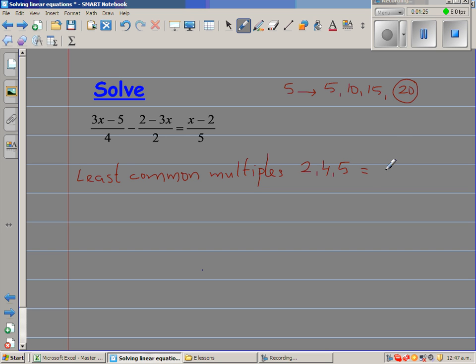So the least common multiple is 20. So what am I going to do with this 20? What I am going to do is I am going to multiply all the numerator by 20. So this will become 20 times 3x minus 5 over 4 minus 20 times 2 minus 3x over 2 is equal to 20 times x minus 2 over 5.